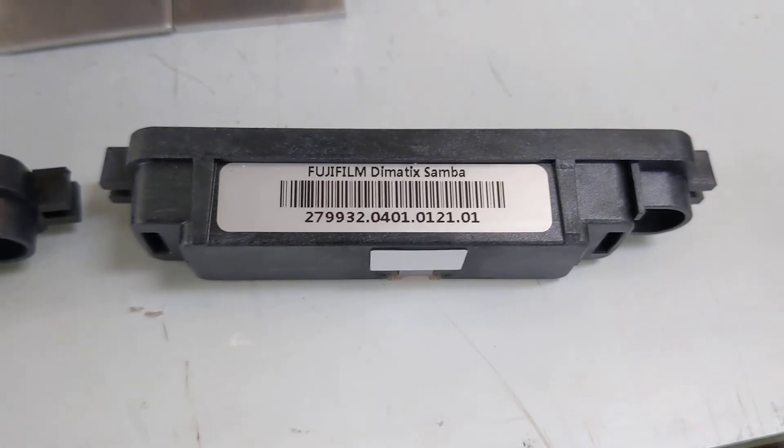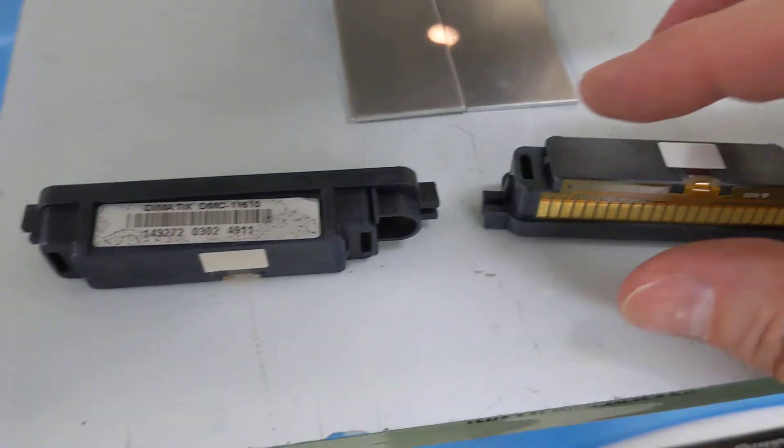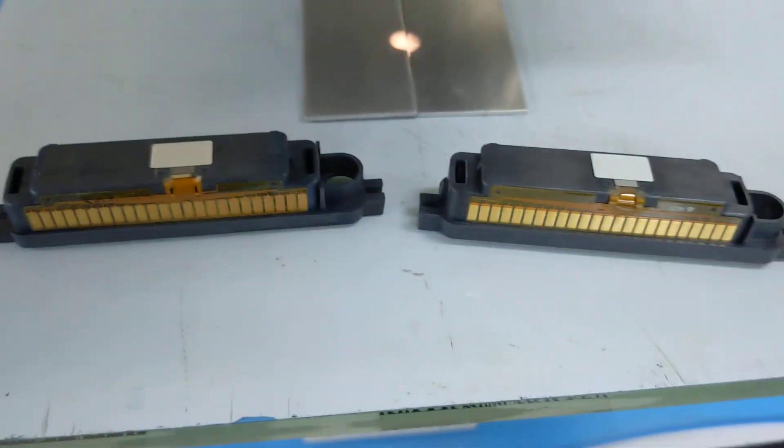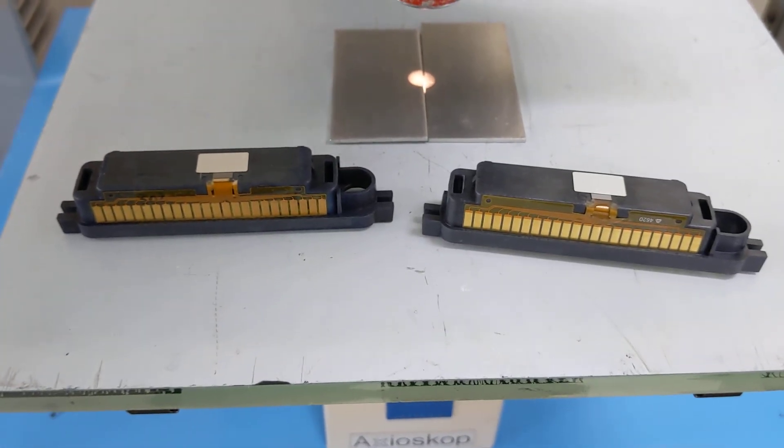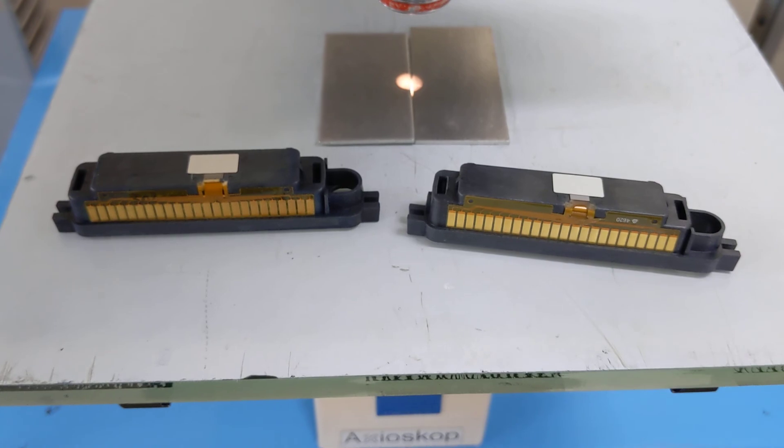Other differences are obviously the name of the part. The Samba module is clearly marked as such, but everything else looks very similar indeed and works perfectly optimally in the Dimatix DMP.